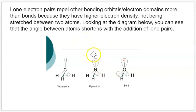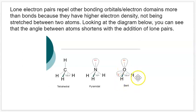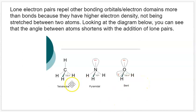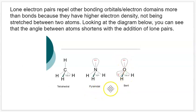A lone pair is not stretched as far from the atom — it's more condensed and dense, so it has more repulsive effect than a bond. This is seen in the bent geometry of water. Water is still pseudotetrahedral because the central oxygen has four things coming out: two bonds and two lone pairs. The bond angle between the two hydrogen bonds is 104.5 degrees. The more lone pairs we add, the more the other bond angles decrease. These are three pseudotetrahedral geometries: tetrahedral, then pyramidal with one lone pair, then bent with two lone pairs.